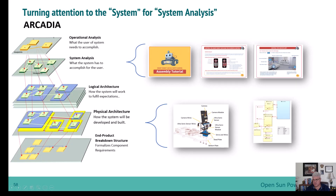We're going to go from the physical architecture that we were working with and use the manual information there for how it was constructed. Now we're going to shift to looking at some of the operating instructions of the assembly manual — specifically the remote section for the IR remote that was used — and also the app to develop the content for this.